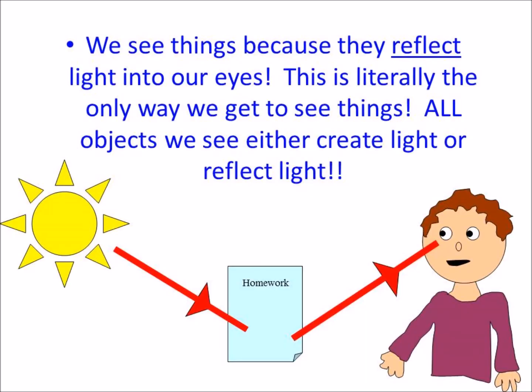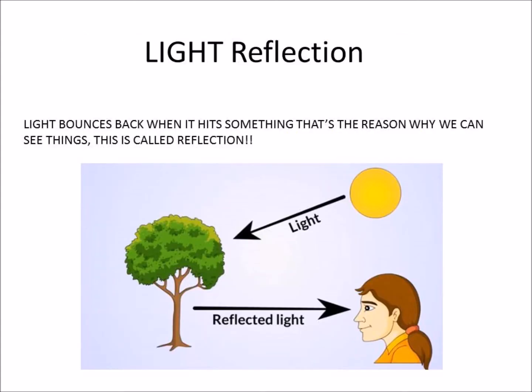Property number five: we see things because they reflect light into our eyes. This is literally the only way we get to see things. All the objects that we can see either create light or reflect light. Here we can see how that reflection works — light bounces back when it hits something. That's the reason why we can see things. This is called reflection.